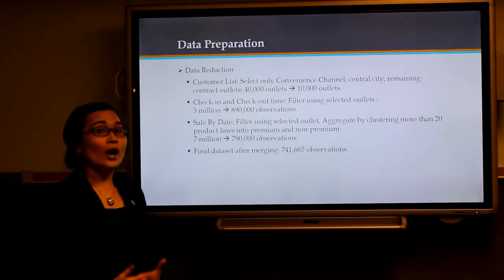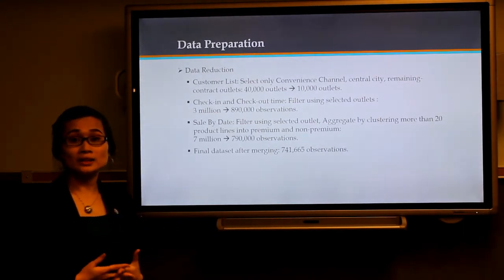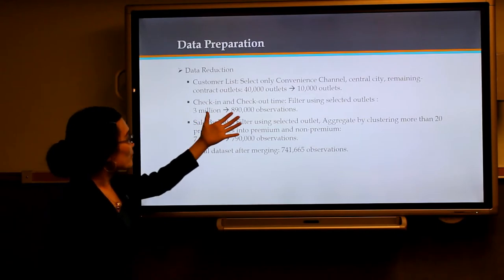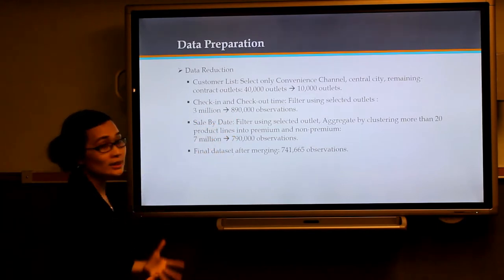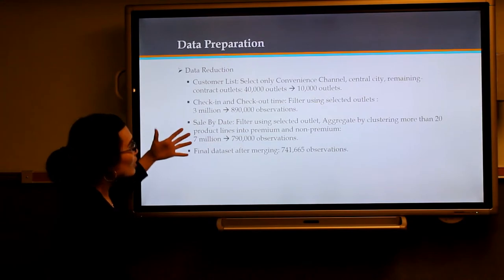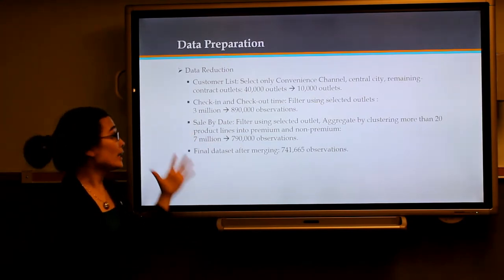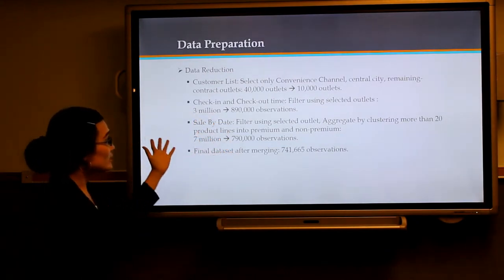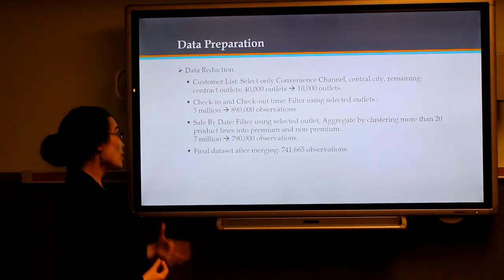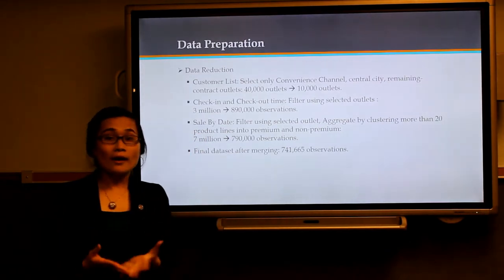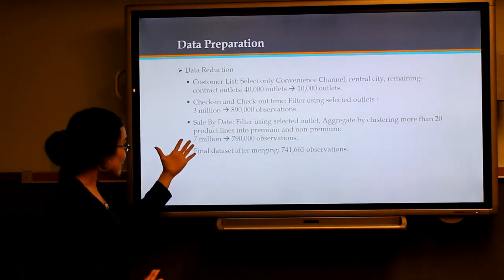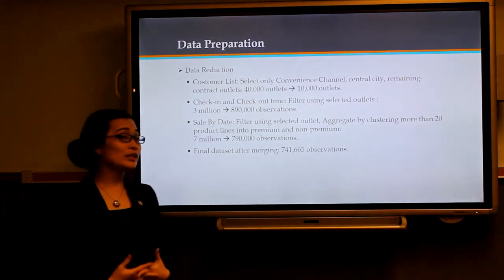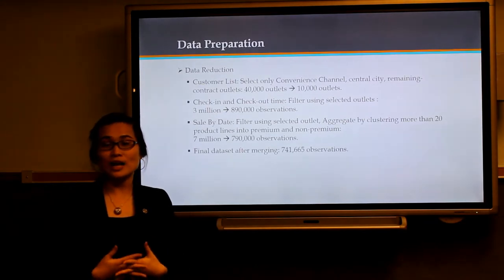For data reduction, we reduce the number of observations from customer list from 40,000 into 10,000. We use the selected outlet for filtering purposes and reduce greatly the number of observations in check-in and check-out files from 3 million into less than 1 million observations. The same thing applies for sale-by-date files, reducing from more than 7 million observations into less than 1 million. The final merged data set contains more than 700,000 observations.